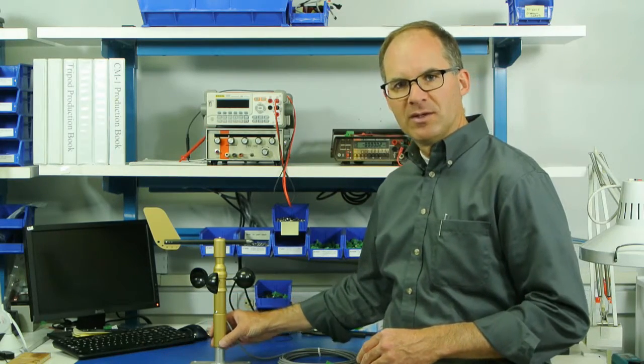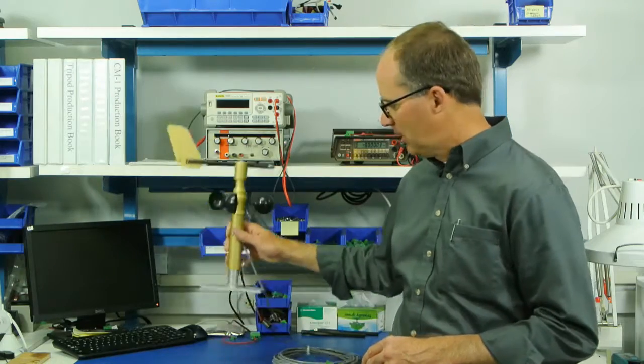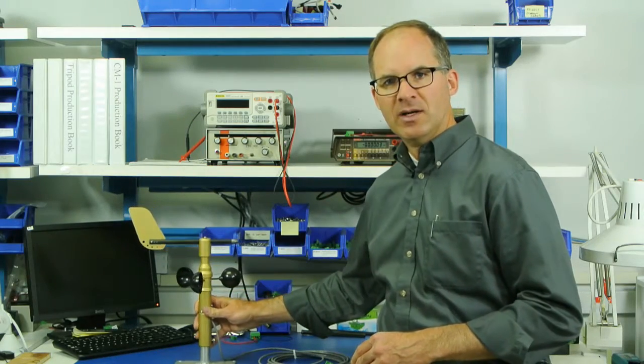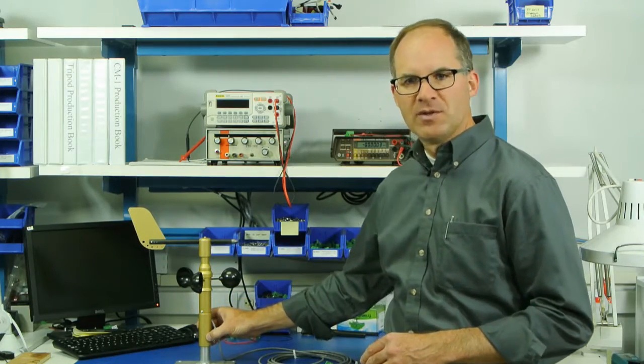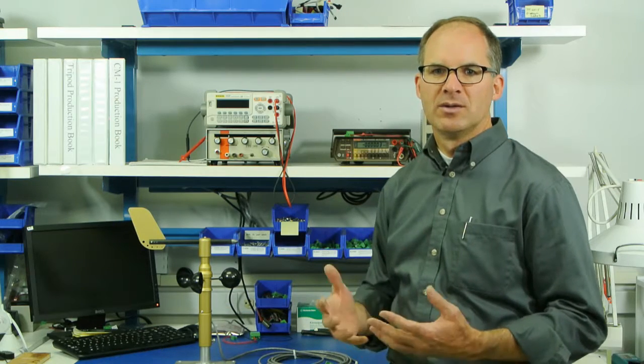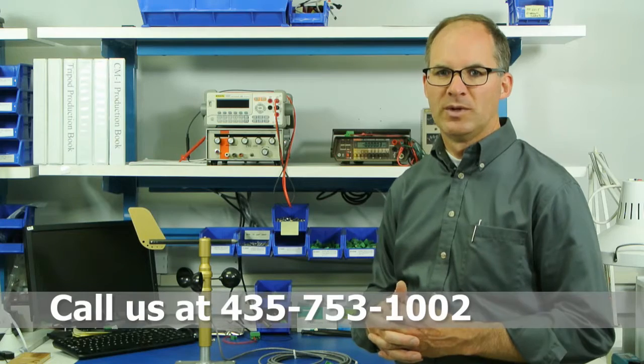The wind sensor can be mounted directly onto a 3-quarter inch pipe, such as this test stand we have here. The diameter is the same as a 1-inch pipe, so standard structural pipe fittings can be used to mount the weather station to 1-inch pipes.